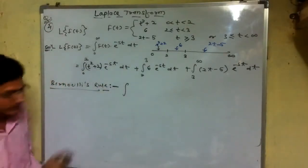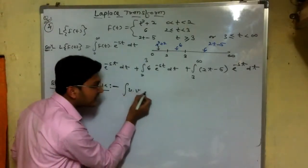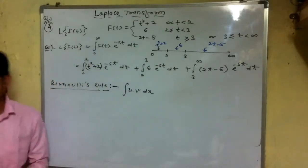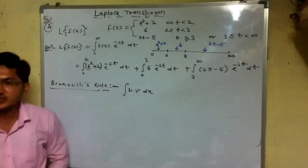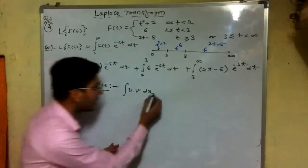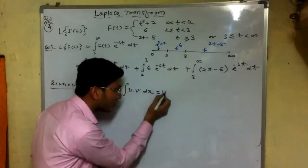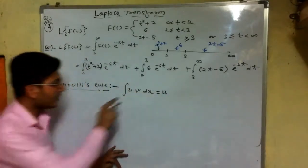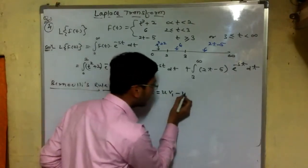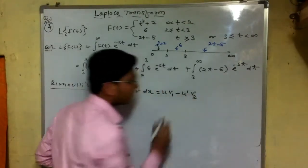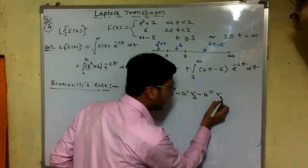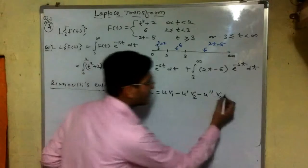The Bernoulli rule states: when integrating a product u·v, treat u as the function to differentiate repeatedly and v as the function to integrate repeatedly. The rule follows the ILATE order — Inverse, Logarithm, Algebra, Trigonometry, Exponential — to decide which function is u. The signs alternate: plus, minus, plus, minus, and so on. The process stops when differentiation of u yields zero.